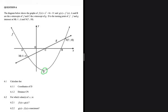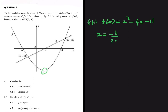Let's go ahead and calculate the coordinates of D, which is the turning point of our graph. We have f(x) = x² - 4x - 11, and we want the x value of the turning point first. After we have the x value, we can find the y value. The formula is x = -b / 2a, which always holds when you want the x value of the turning point.